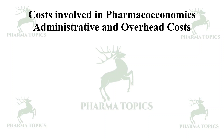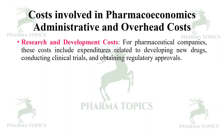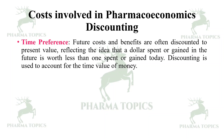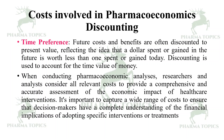Then administrative and overhead costs. Research and development costs for pharmaceutical companies include expenditures related to developing new drugs, conducting clinical trials, and obtaining regulatory approvals. Then pharmacoeconomic study costs — expenses associated with conducting a pharmacoeconomic analysis including data collection, analysis, and modeling. Then discounting: future costs and benefits are often discounted to present value, reflecting the idea that a dollar spent or gained in the future is worth less than one today. It is important to capture a wide range of costs to ensure decision makers have a complete understanding of the financial implications.